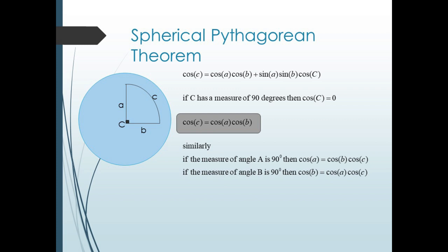A special case of the law of cosines occurs when one of the vertex angles is 90 degrees. Consider our third version, starting with cos c, and assume capital C is 90 degrees. Then cos C = cos 90 = 0, so we're left with: cos c = cos a · cos b. This is the spherical version of the Pythagorean theorem. Similarly, if A = 90°, then cos a = cos B · cos C; and if B = 90°, then cos b = cos a · cos C.